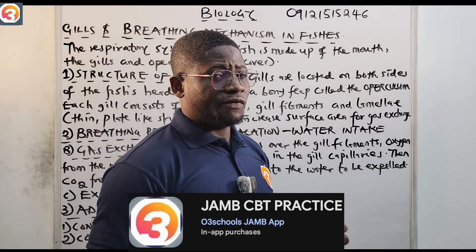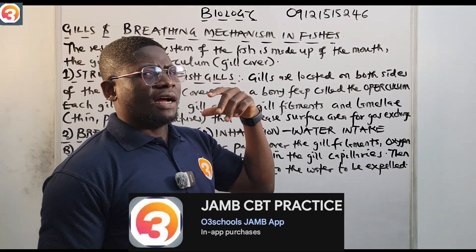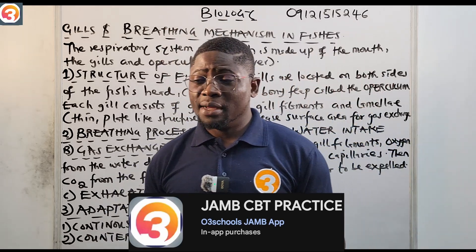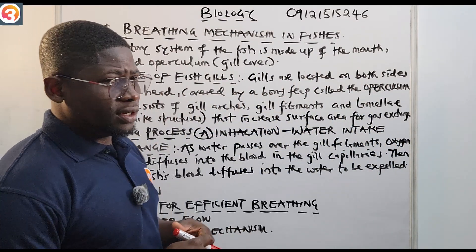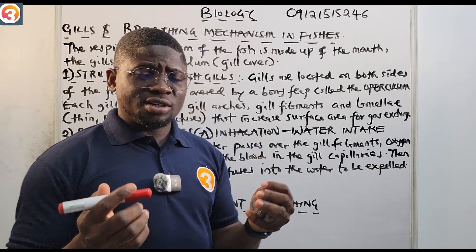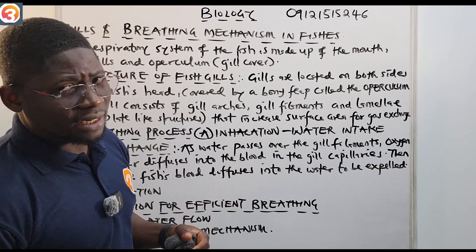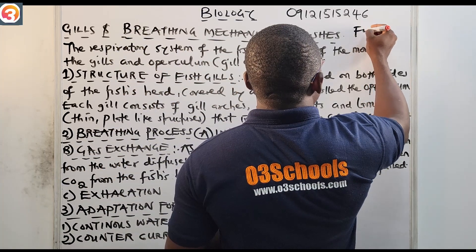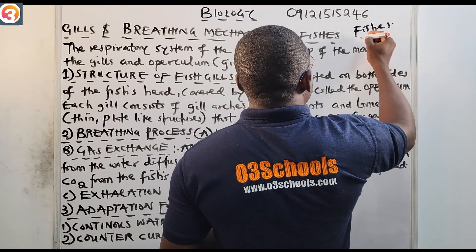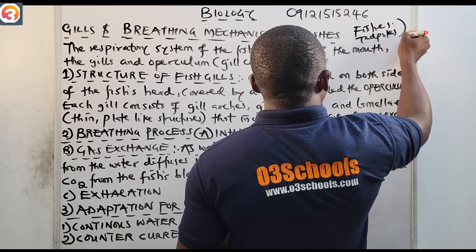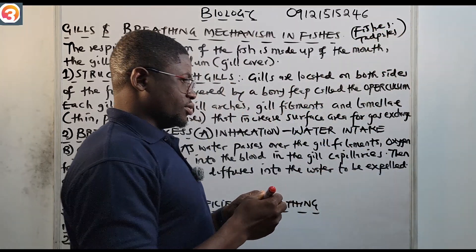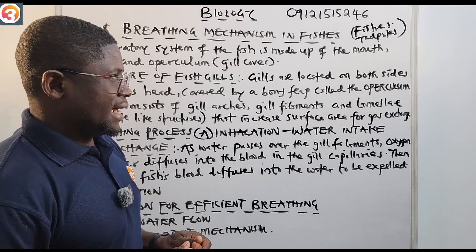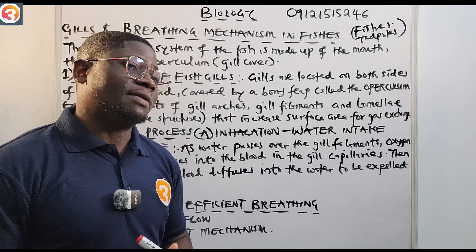First, we look at the gills, then we talk about the breathing mechanism in fishes. The gills are the respiratory surfaces for fishes, as I mentioned in the last class. They are also the respiratory surfaces for tadpoles and crustaceans. The gills are made up of three major parts.